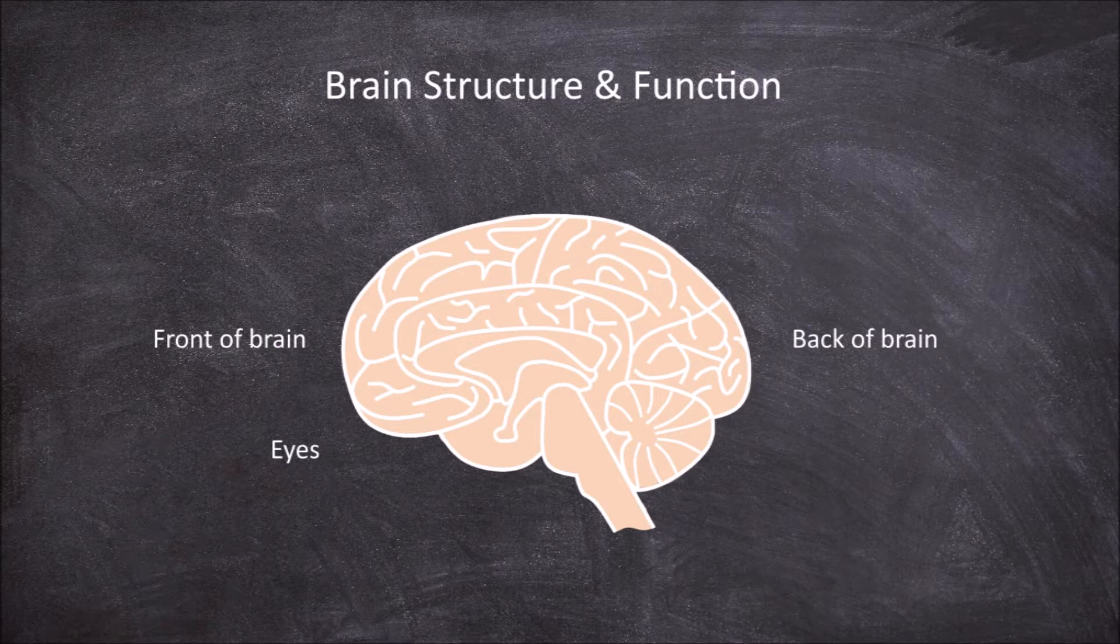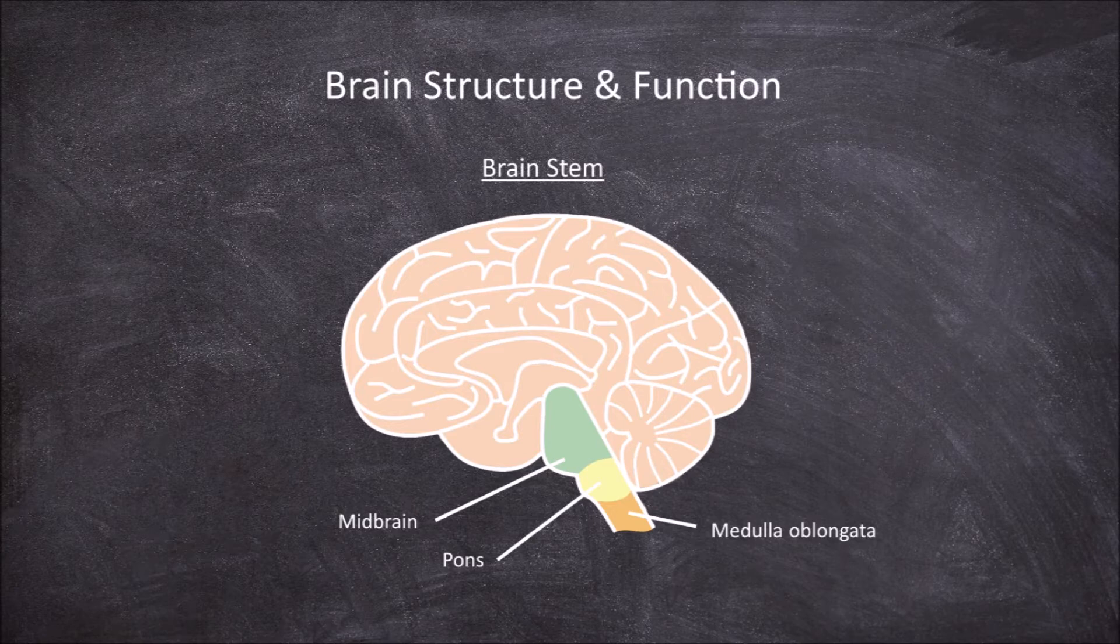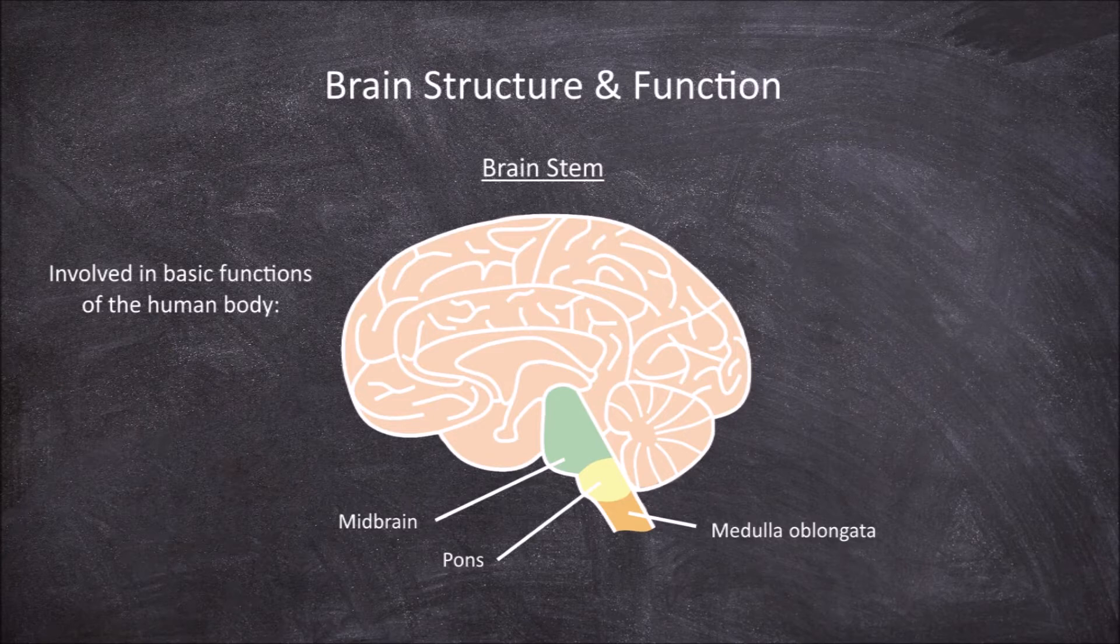The first part of the brain is the brain stem. The brain stem itself has three areas: the medulla oblongata, the pons, and the midbrain. The brain stem has a lot of functions and is involved in many of the basic functions in the human body.